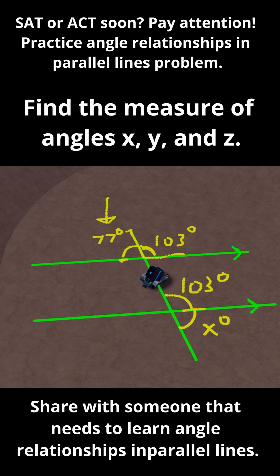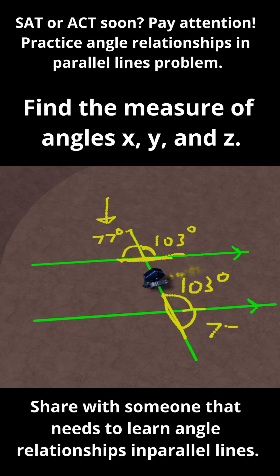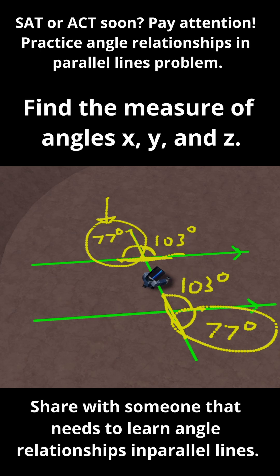Finally, I know that x is 77 degrees. These are along a straight line, so 103 plus x equals 180 degrees — the same situation as before — so x must be 77 degrees. Another way to find x is by realizing that 77 up here and x down there are alternate exterior angles, so they must be equal. That's another way to confirm that x is 77 degrees.